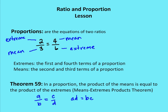So what is a proportion? A proportion is the equation of two ratios. For example, 2 over 3 is equal to 4 over 6 — that's a proportion. The first and fourth terms of a proportion are called the extremes, because they're on the outside. The second and third terms are called the means, because they are in between the extremes. So the extremes are on the upper-left and lower-right, and the means are on the lower-left and upper-right of the proportion.